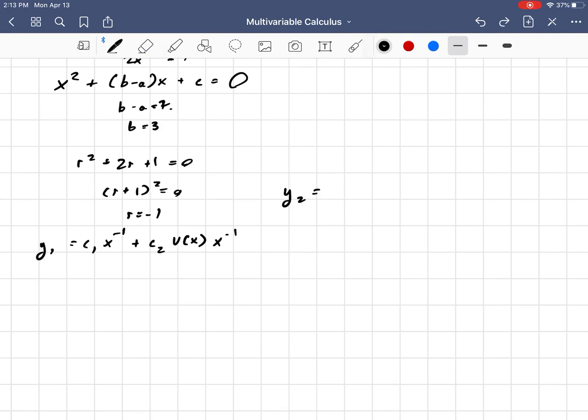So I'm only going to consider this y₂, and I'm not even going to include the constant for now, because we know to just include it at the end. So that's v(x) x to the negative 1. So y₂' is -v(x)x⁻² + v'(x)x⁻¹.